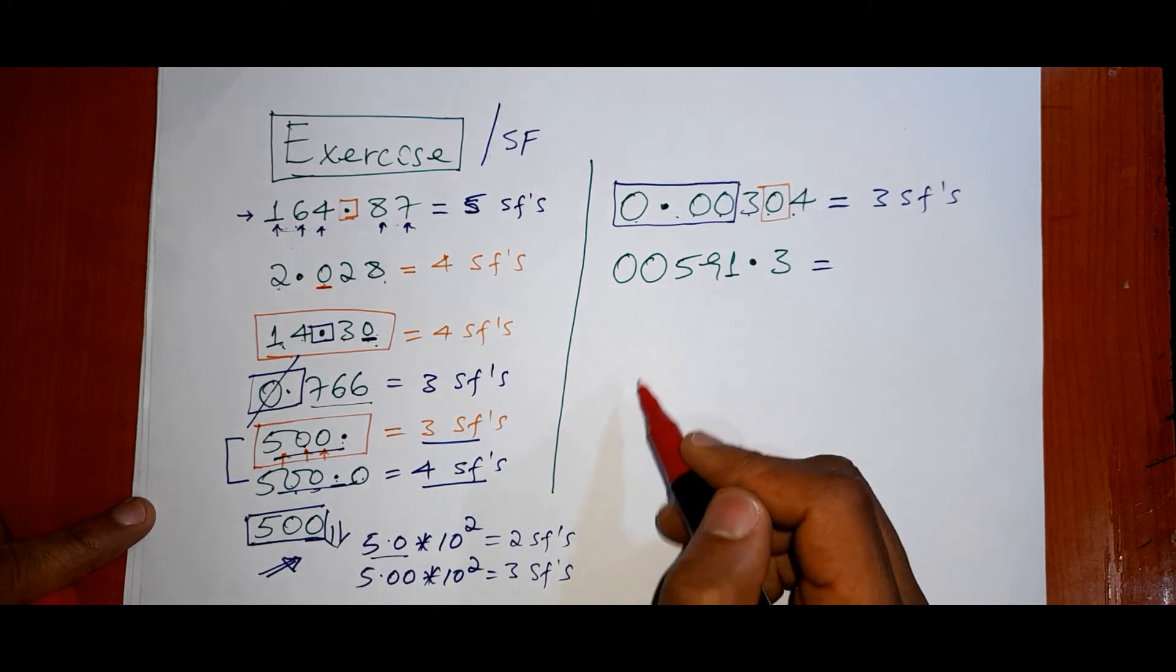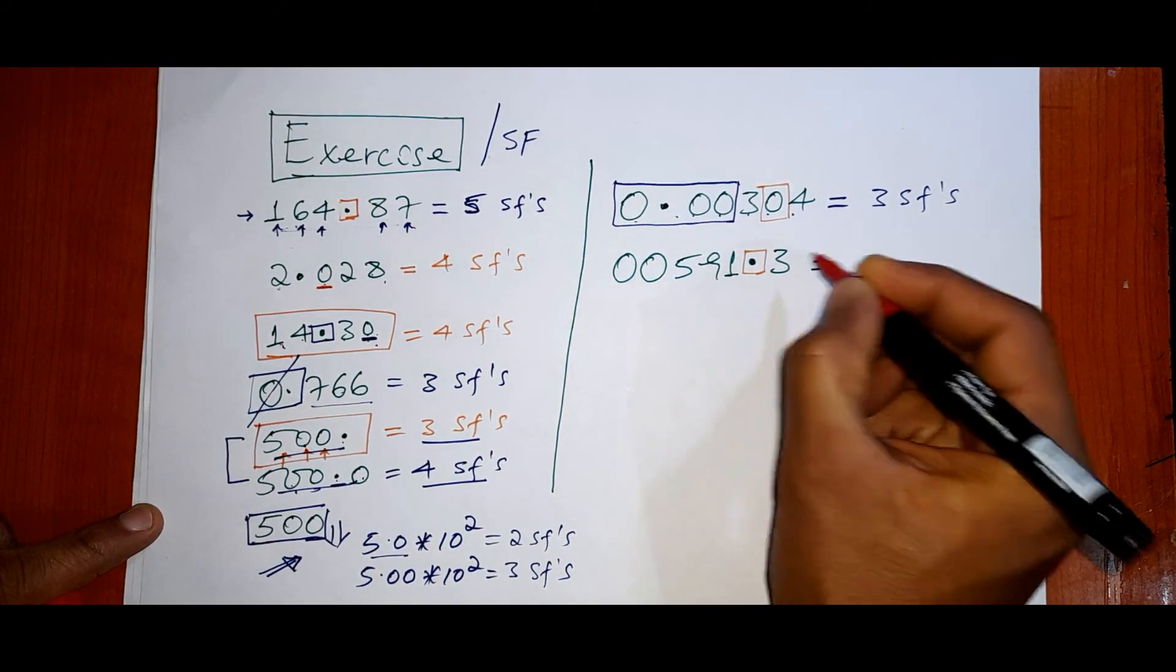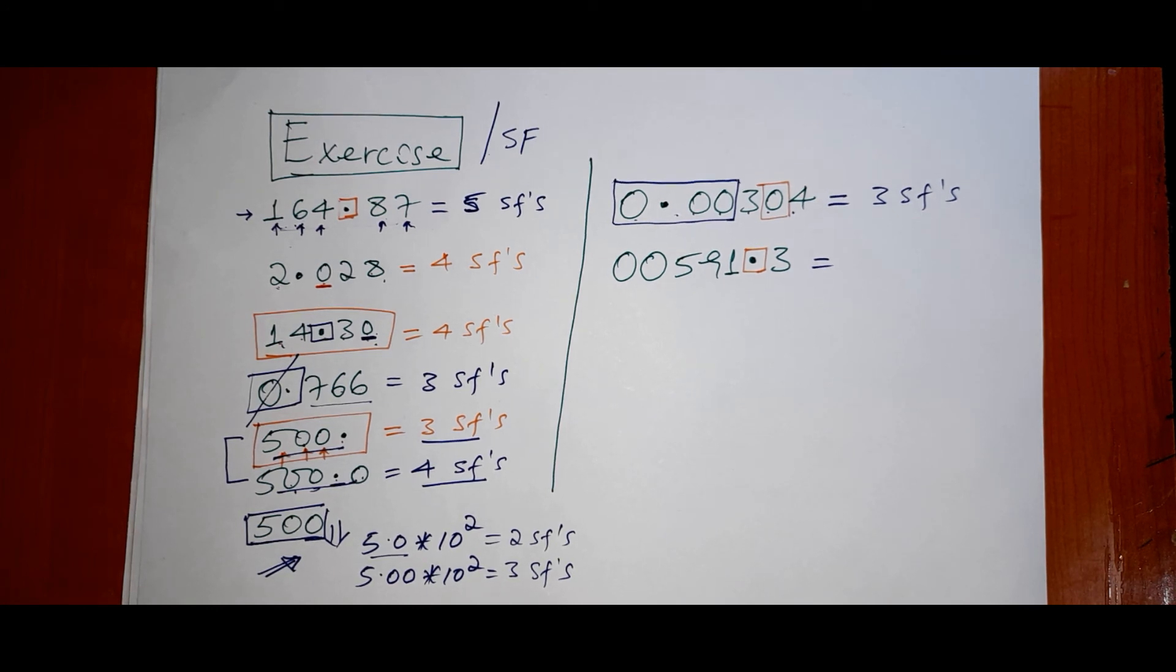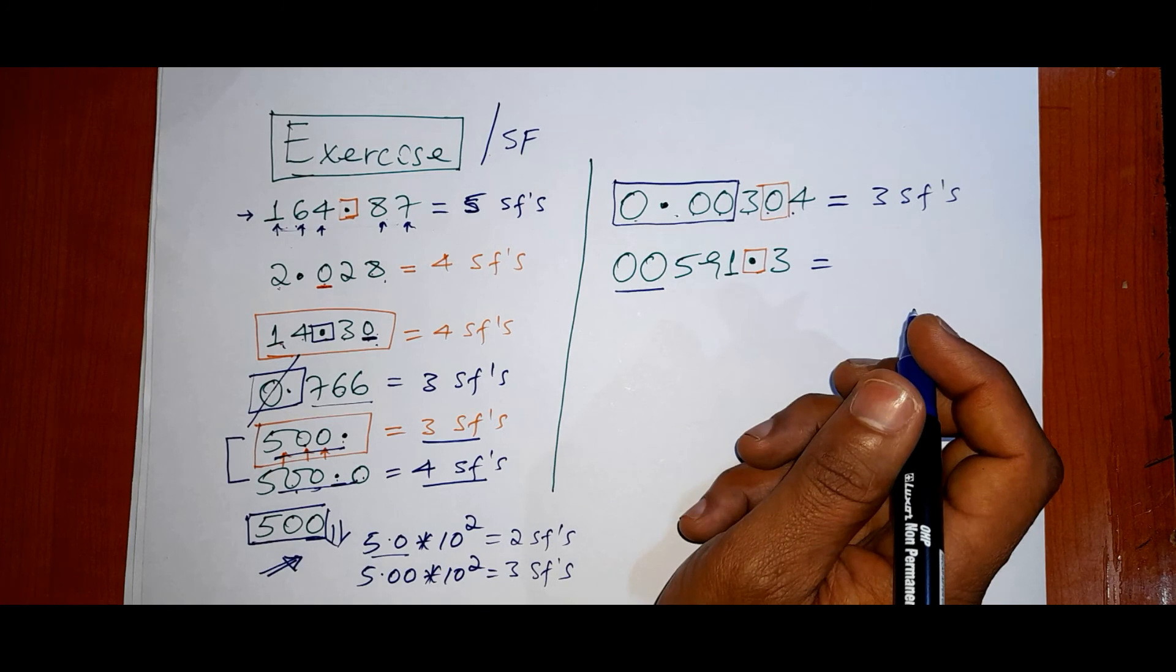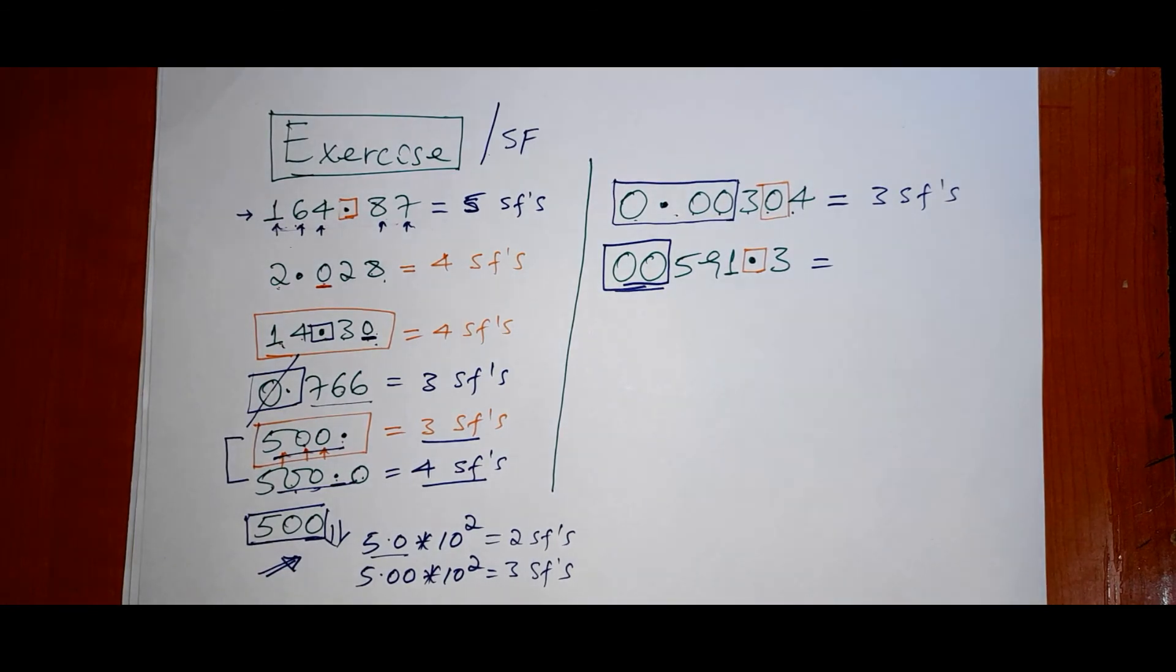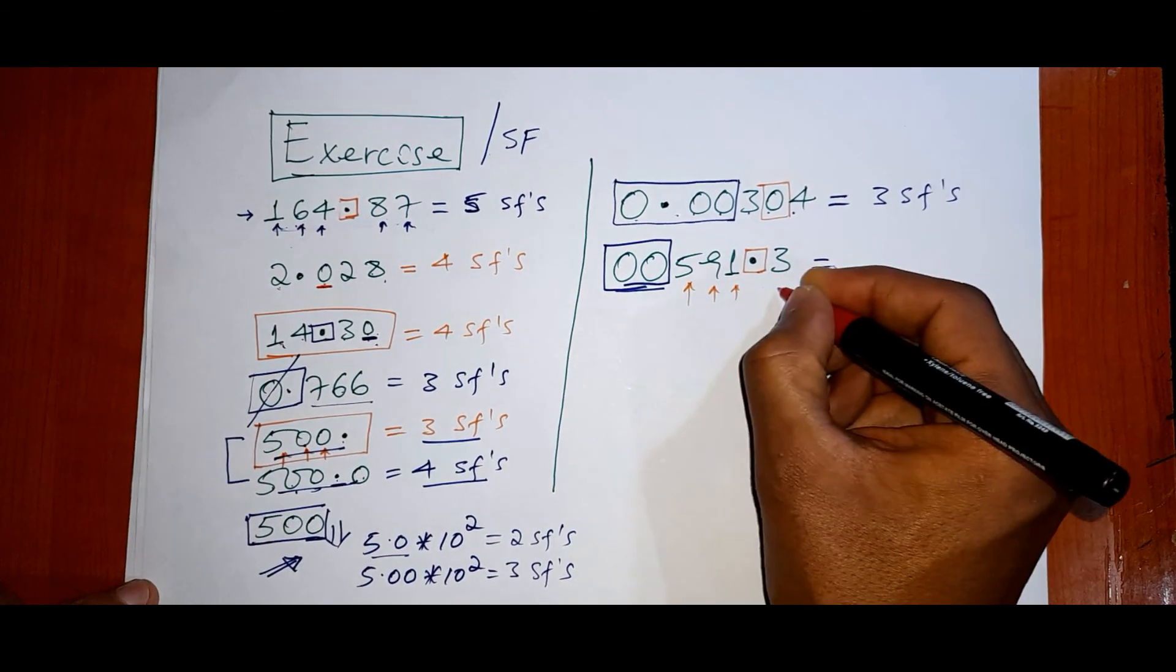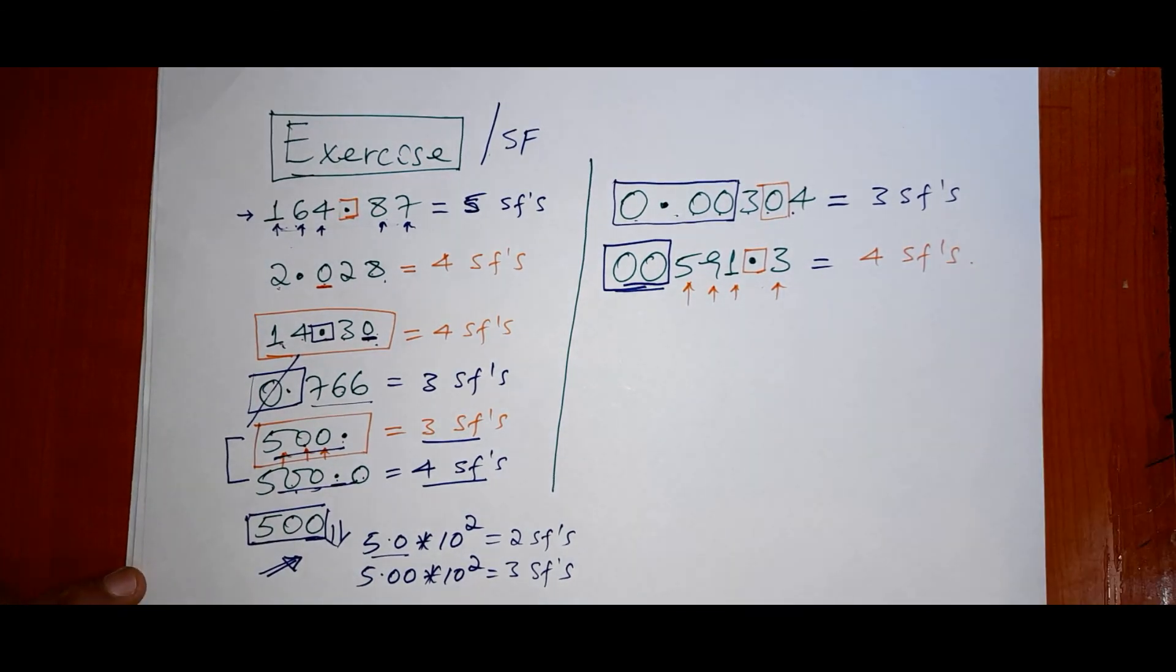Then look: 00591.3. The locations of the decimal point on this number. The zeros at the beginnings of the number, so these are not considered. 00591.3. Zeros at the beginnings of the number are not considered. Just numbers different from zero: 1, 2, 3, 4. This becomes four significant figures.